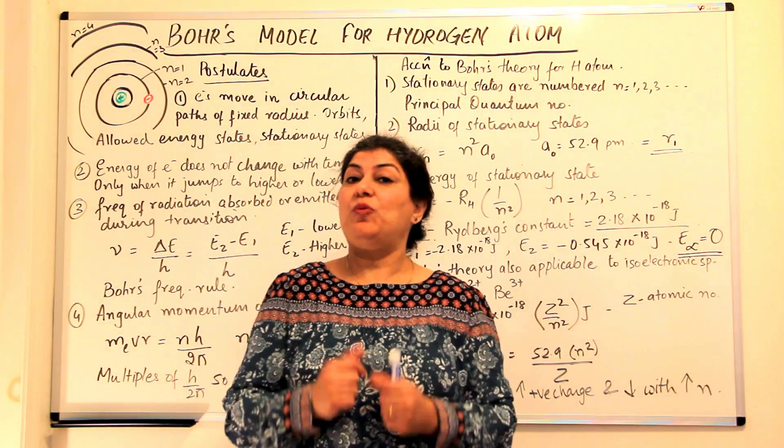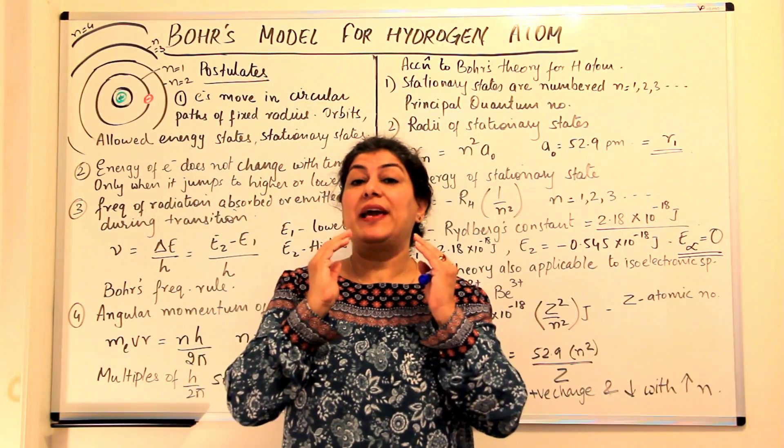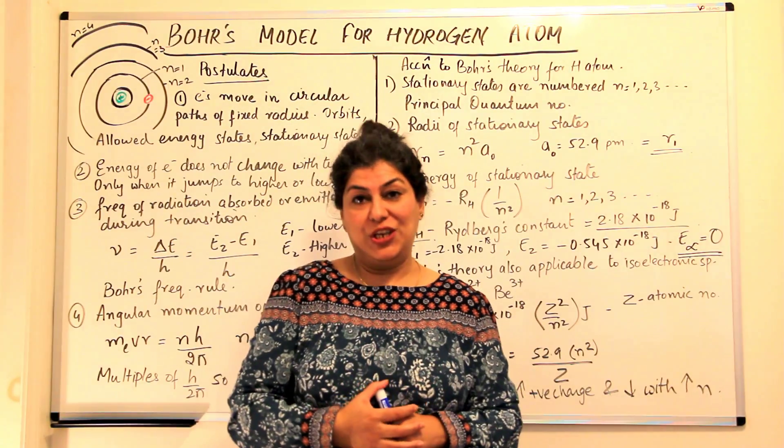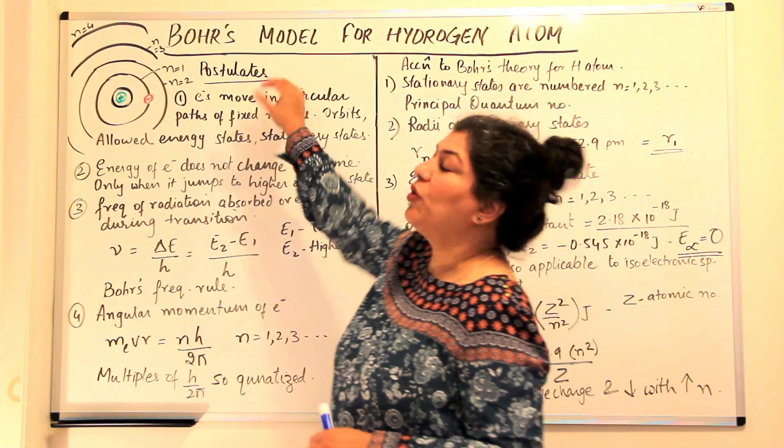So the next model that was given by Bohr, he could explain that drawback in Rutherford's model. And how did he do it? So let us begin with the Bohr's model. What were his postulates?